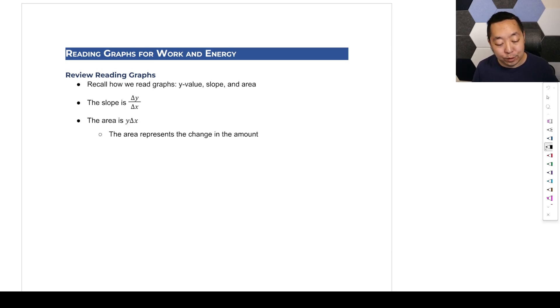Alright, one thing we're going to have to do is read a lot of graphs. Like in kinematics, we did a lot of graphs. Forces might do some graphs, but work and energy also going to have a lot of graphs. Just recall how we look at graphs. We look at the y value, the slope, and the area. The slope is the change in the y variable, and the area is y times the change in the x variable, whatever those axes tend to be.